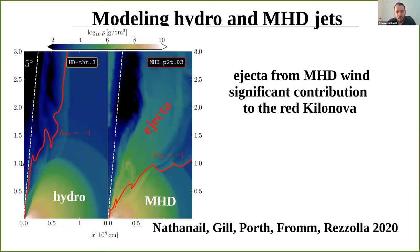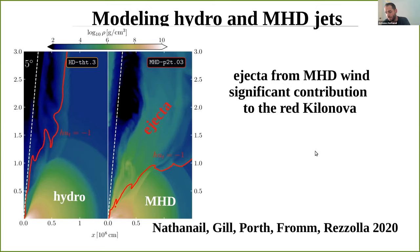Looking at the density profiles for the hydro and MHD cases, the important point is that in the MHD case you don't have only the jet but also a really strong MHD wind. Matter is continuously ejected even after the hypermassive neutron star is formed, coming from the residual accretion disk around the black hole. This can have a really significant contribution, especially to the red kilonova.